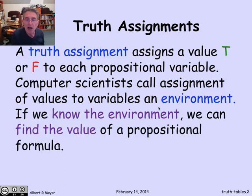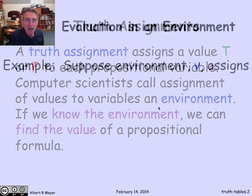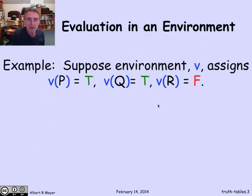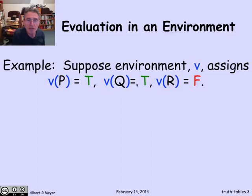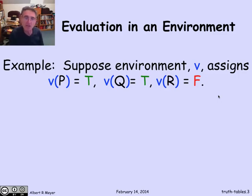Let's look at an example of three variables, p, q, and r, that are true-false value. I've got an environment v in which p is true and q is true and r is false, so v of p is T, et cetera. I'm thinking of v as a function that maps a variable to its value.